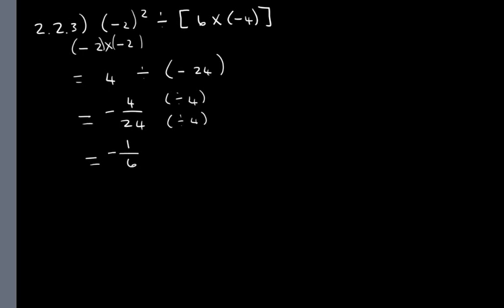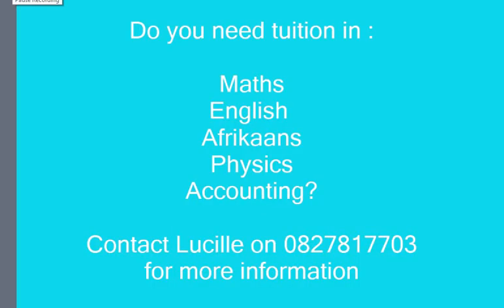So that gives us negative 4 over 24, which we need to simplify. What divides into 4 that divides into 24? 4. That's correct. And 4 divided by 4 is 1. 24 divided by 4 is 6, leaving us with an answer of negative 1 over 6.